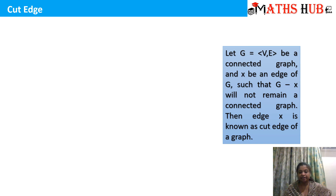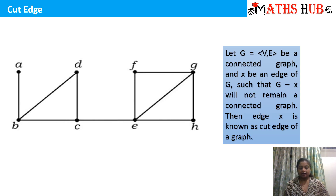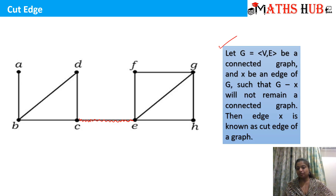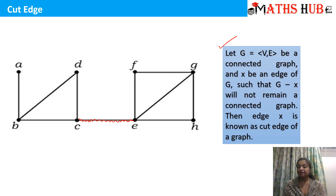Now let's come to the definition of cut edge. A cut edge is that edge which, when removed, makes the graph disconnected. For example, if we remove edge CE from the graph shown, we get one connected component on one side and another component on the other side. Formally, let G = (V, E) be a connected graph and X be an edge of G such that G minus X is no longer connected. Then edge X is known as a cut edge of G.